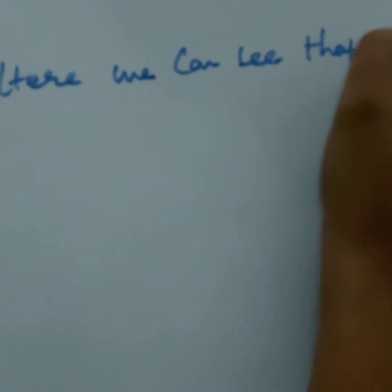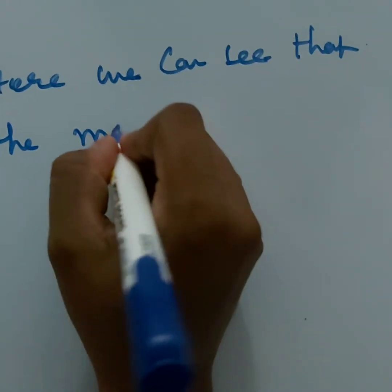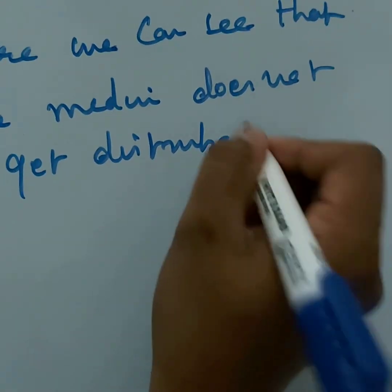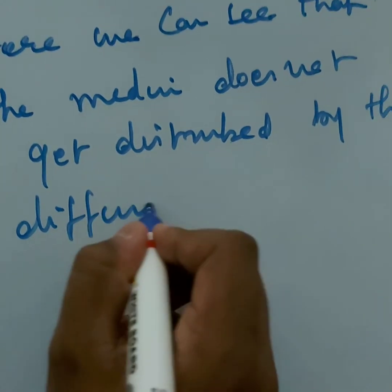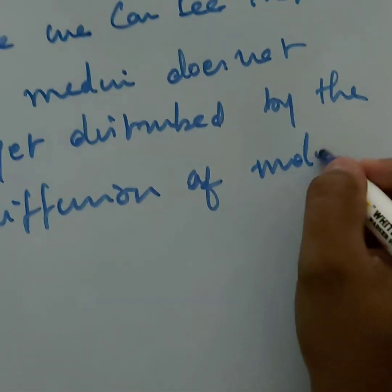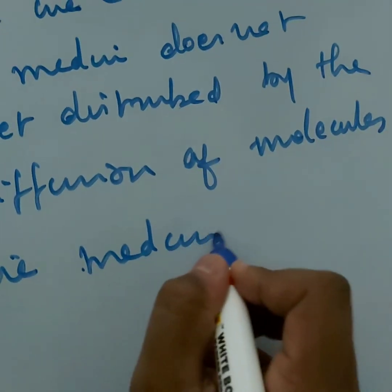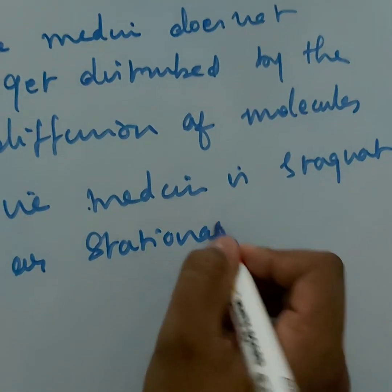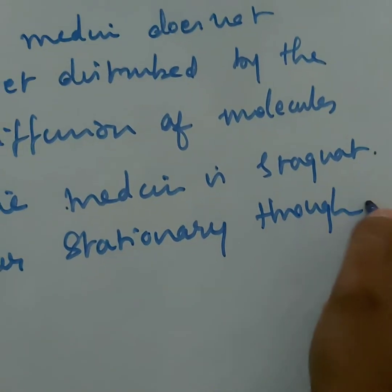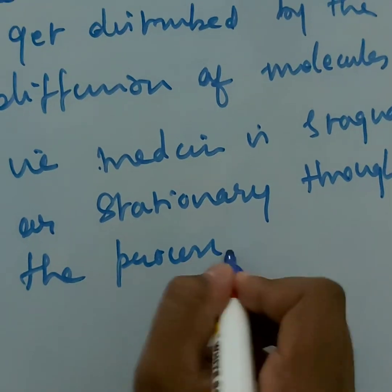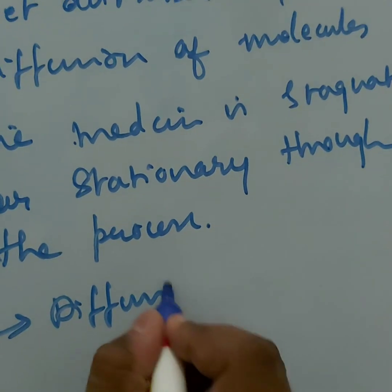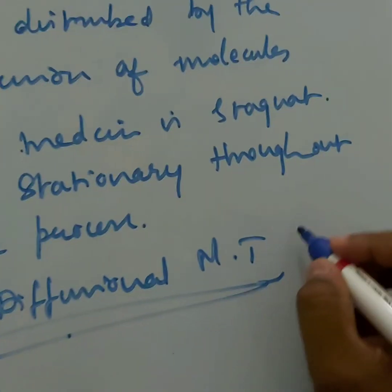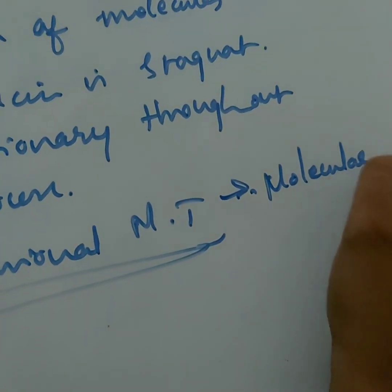In all these examples we can see that the medium does not get disturbed by the diffusion of molecules — that is, the medium is stagnant or stationary throughout the process. This is diffusional mass transfer, and the mechanism involved is molecular diffusion.